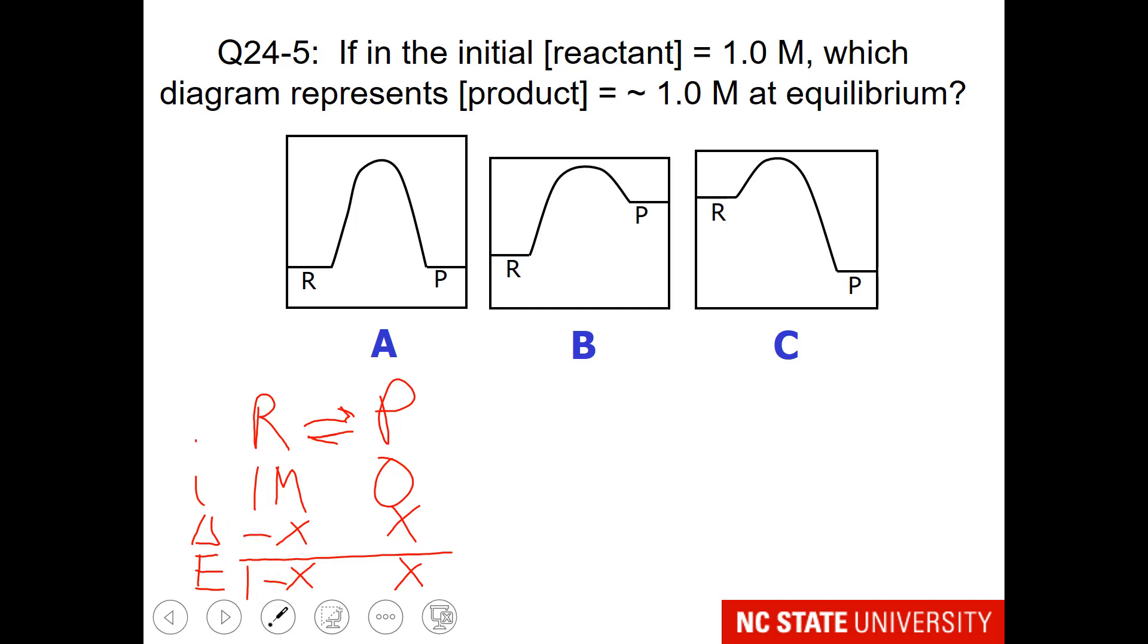and this concentration will be X. What we are looking for in equilibrium is the reaction that distributes itself such that most of the reactant is converted into product. Which one of these diagrams says to you, when I start with a reactant, convert most of it to product?